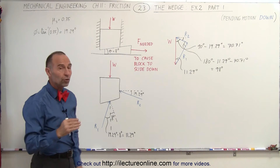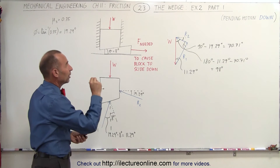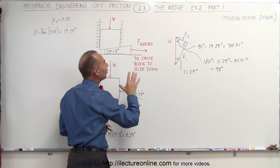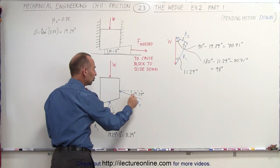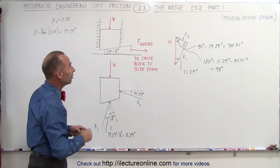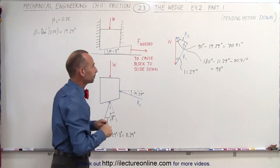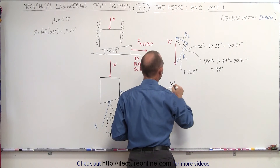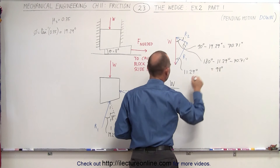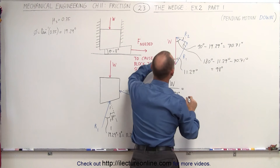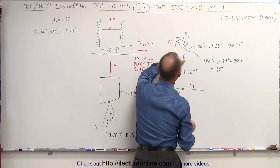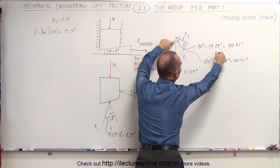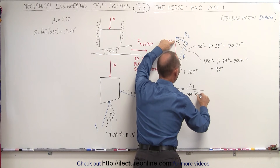Now that we know the three angles, we can use the law of sines to find the values for R1 and R2. We take the weight of the block divided by the sine of the angle directly across from it, which is 98 degrees, and set that equal to R1 divided by the sine of the angle directly across from R1, which is 70.71 degrees.